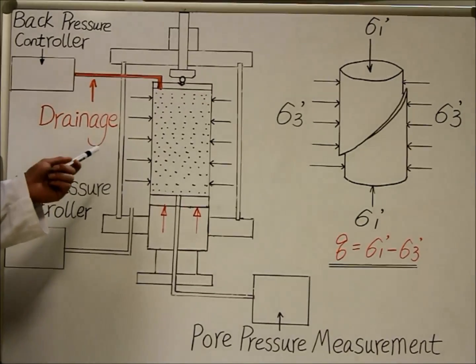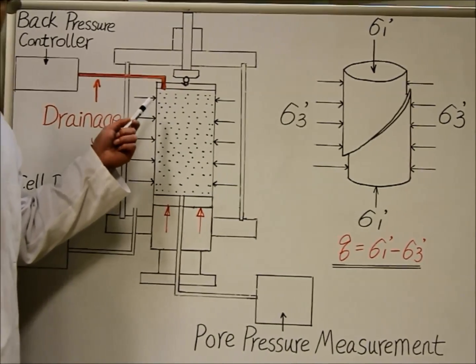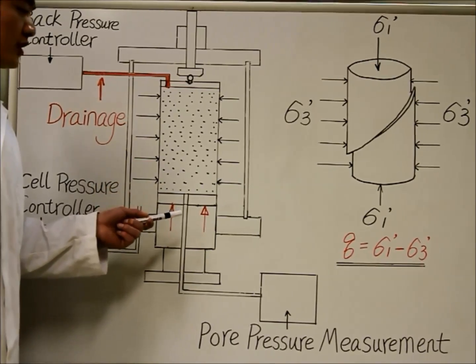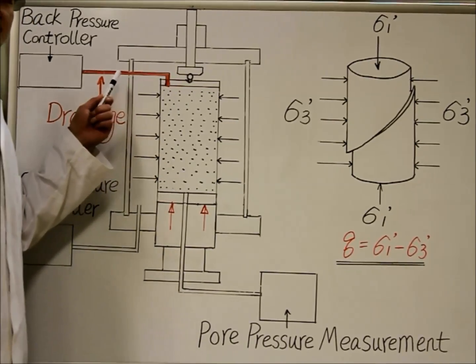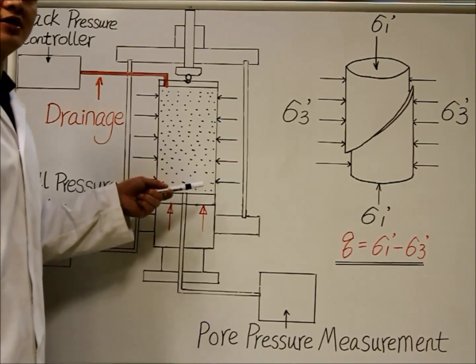The drainage valve connected to the top of the sample is opened throughout the test to allow the water to drain off from the sample. The load plates will move up to generate the vertical load on the specimen.